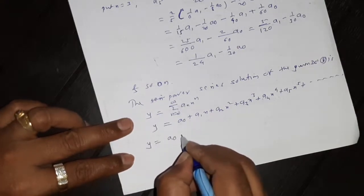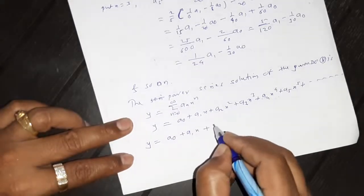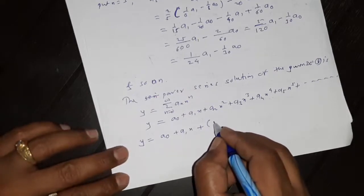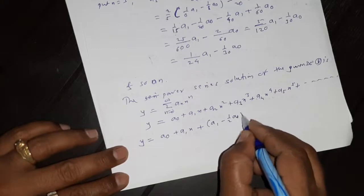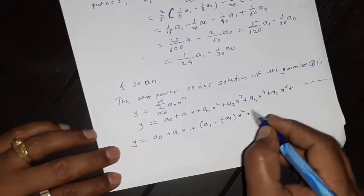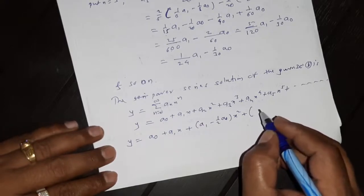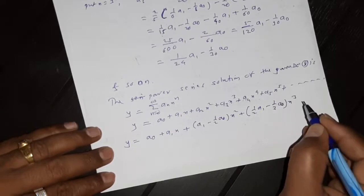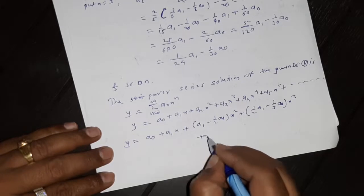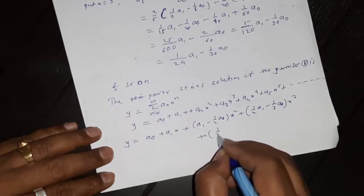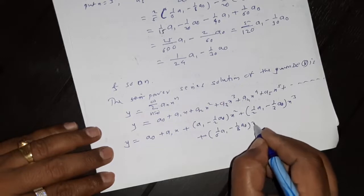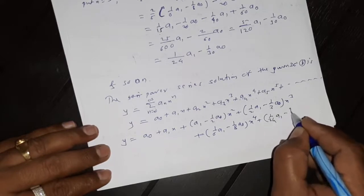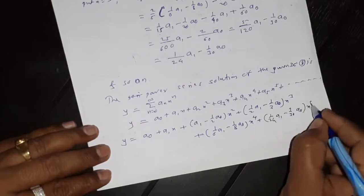So y equals: a₀ is a₀, a₁ is a₁, but a₂ is a₁ minus one-half a₀, into x squared. Then a₃ is a₁ minus one-third a₀, times x cubed. And a₄ is one-sixth a₁ minus one-eighth a₀, times x to the 4th. And a₅ is one-twenty-fourth a₁ minus one-thirtieth a₀, times x to the 5th.